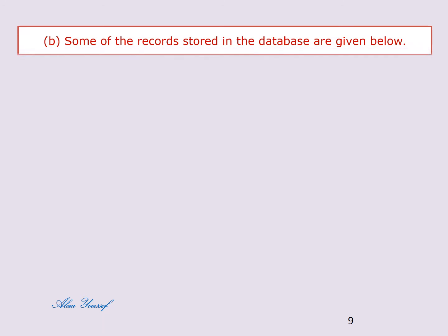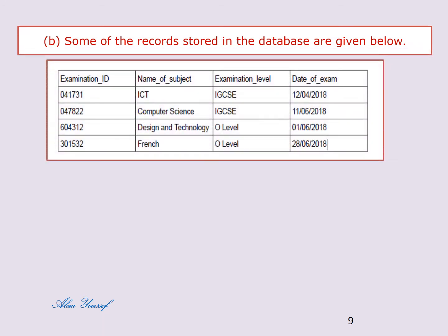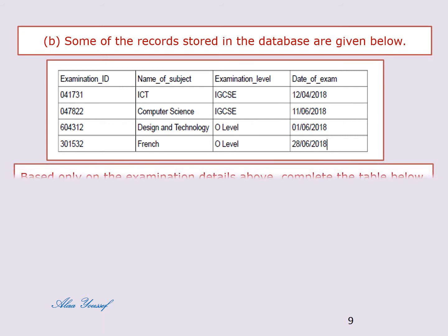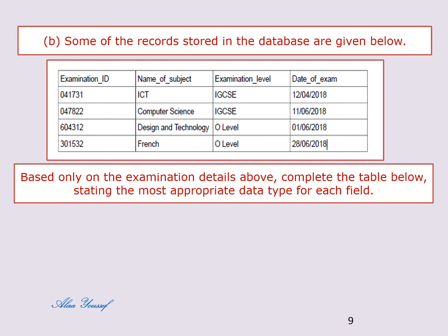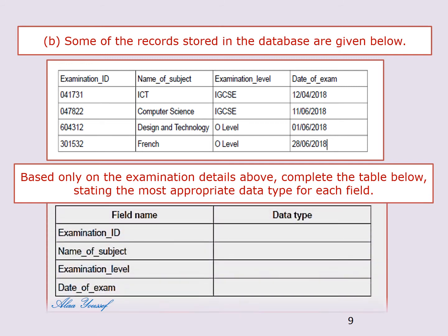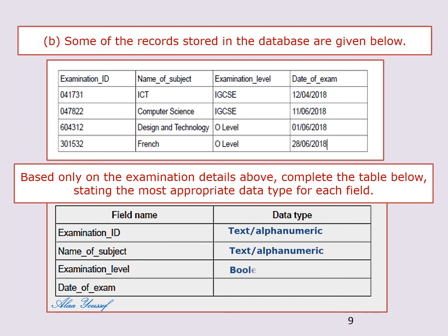B) Some of the records stored in the database are given below. Complete the table stating the most appropriate data type for each field. The answer: examination ID — text or alphanumeric; name of subject — text or alphanumeric; examination level — boolean.